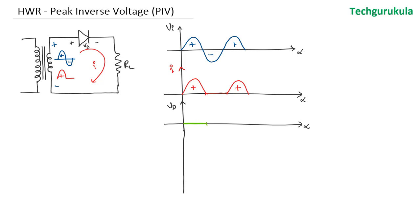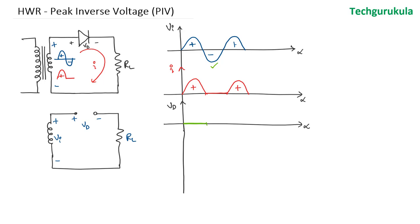Now when it comes to the second half cycle, which is the negative half cycle, the diode is in reverse bias where the diode is open circuited. In that case, the diode is open circuited and the voltage across the diode VD equals the voltage at the secondary winding VI. So VD equals VI when alpha is between pi and 2 pi, while this voltage is zero in the first half cycle. The entire input voltage gets applied across the diode, and when we come to the next positive half cycle, the voltage across the diode is zero.